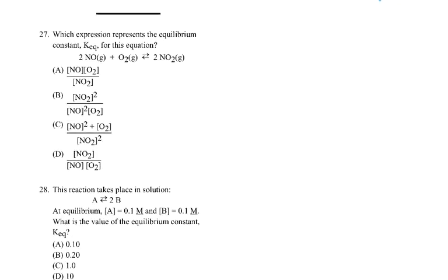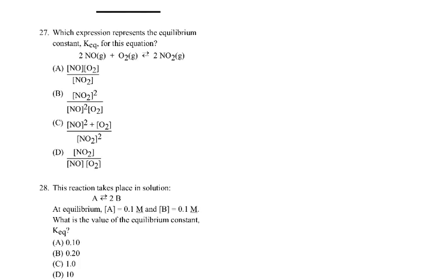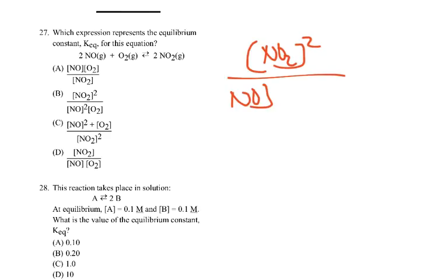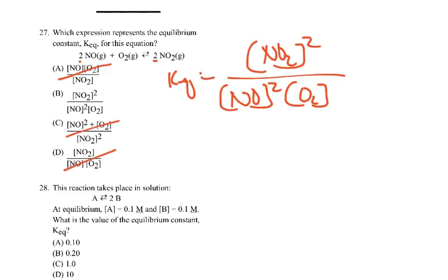Question 27: write the equilibrium constant for the gas-phase reaction. All species are gases, so everyone is included. K_eq = [NO₂]² / ([NO]² × [O₂]). NO₂ is the product squared on top; NO is squared and O₂ is to the first power on the bottom, multiplied together. That's answer B.